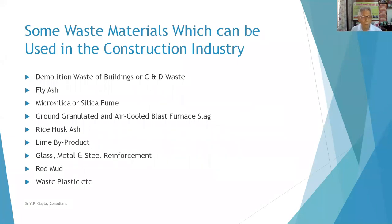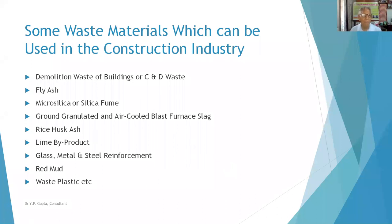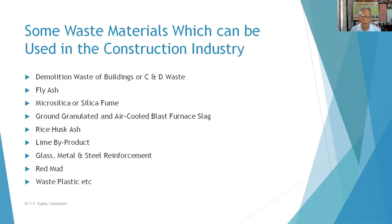Now I am coming to some types of waste normally available for construction. Biodegradable waste can be converted to manure for use in agriculture to enrich soils. Non-biodegradable waste lying on roads includes demolition-based or C&D waste, fly ash, micro silica, GGBS, ground granulated blast furnace slag, rice husk, lime byproduct, glass, metal, steel, red mud, waste plastics, and many others.